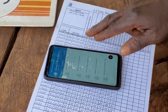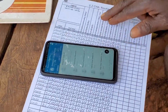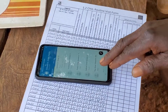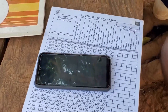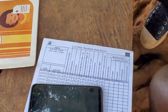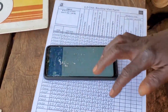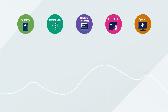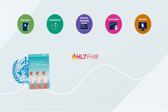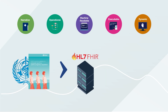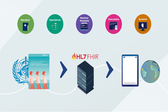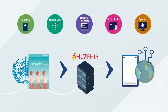OpenSRP is built upon FHIR's standardized data model, which facilitates data exchange between different applications within the health system. This enables frontline health workers to use the application to track patients across facility and community visits, providing better continuity of care. OpenSRP is natively compliant with WHO SMART guidelines, which are based on HL7 FHIR. WHO SMART guidelines enable configurable and flexible health worker applications that can solve specific local challenges within the guardrails of clinically proven global health standards, ensuring that clinical protocol adherence is evidence-based and up-to-date.